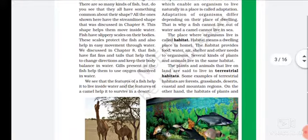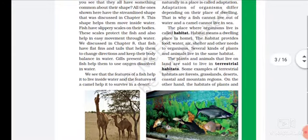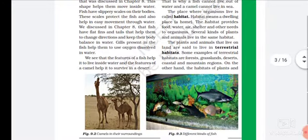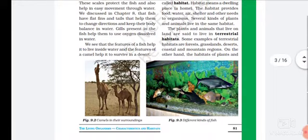The place where organisms live is called habitat. What do we call where animals live? Habitat. For example, the camel lives in the desert habitat, and fish live in water habitat.